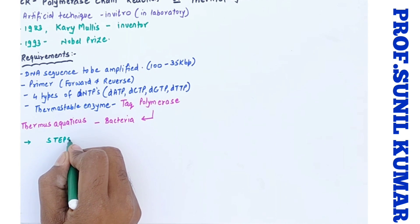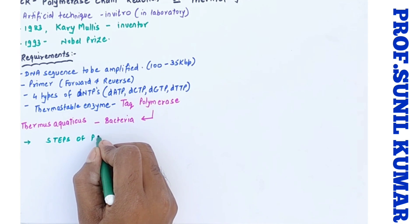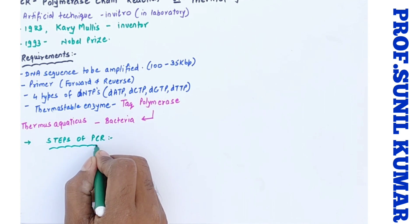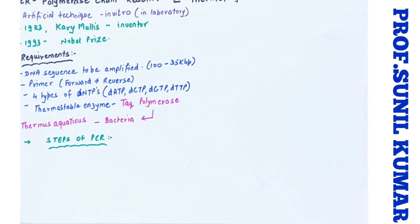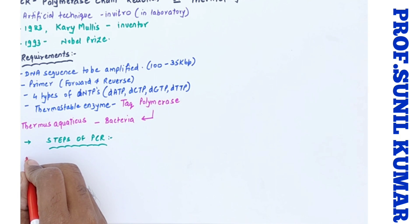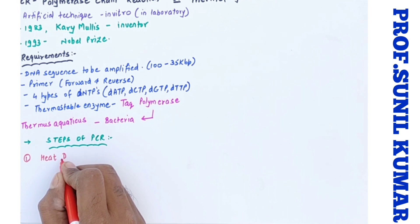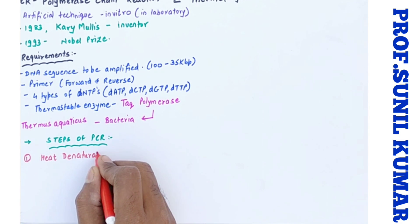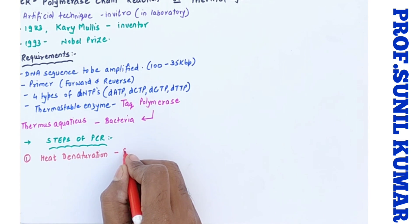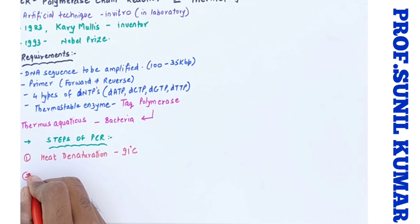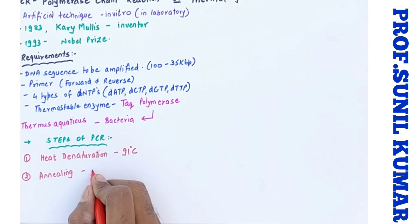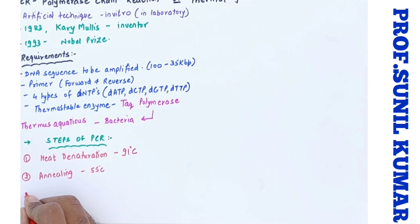We need to understand these steps of polymerase chain reaction. So logically there are three steps involved and I call it HAP in short. When I say H, H stands for heat denaturation. It means here we are going to somewhere use high temperature around 91 degrees Celsius for denaturing the DNA double strand.